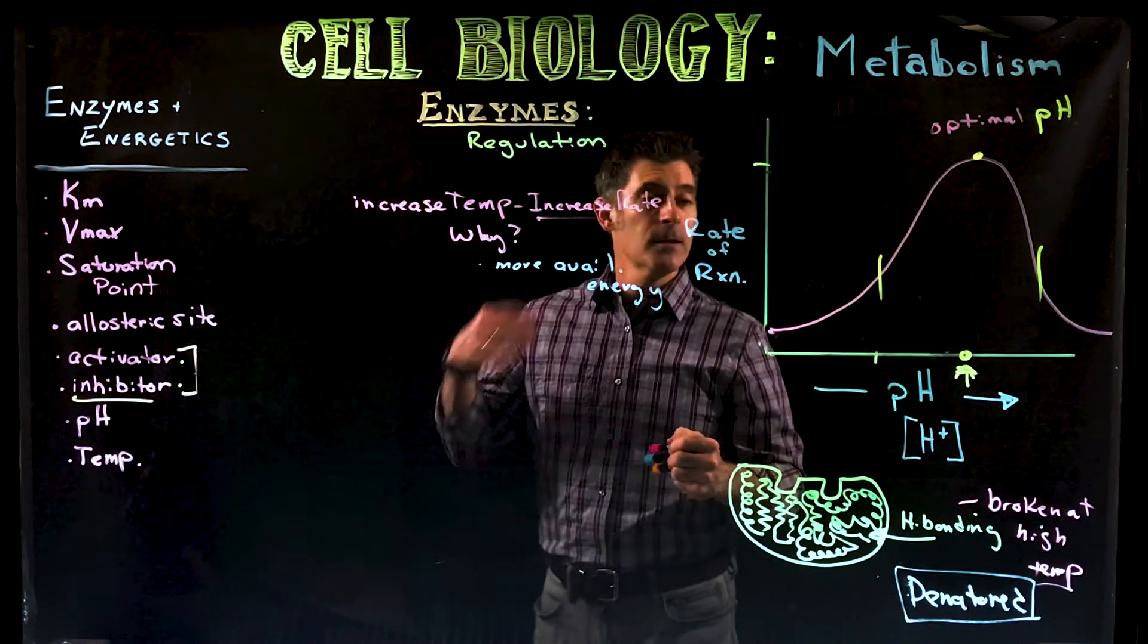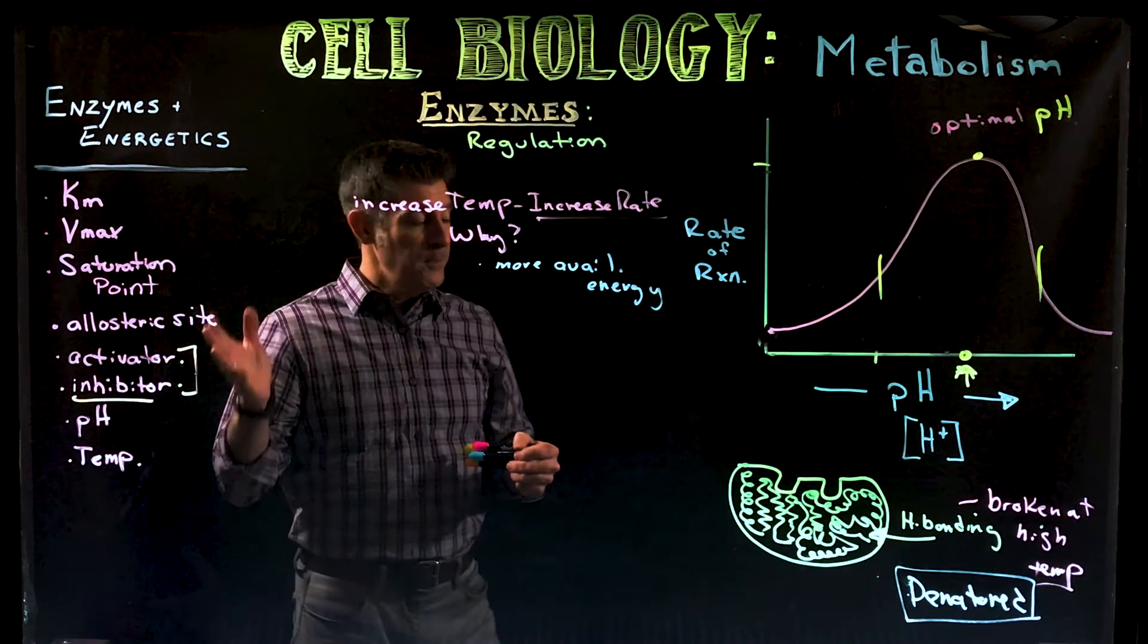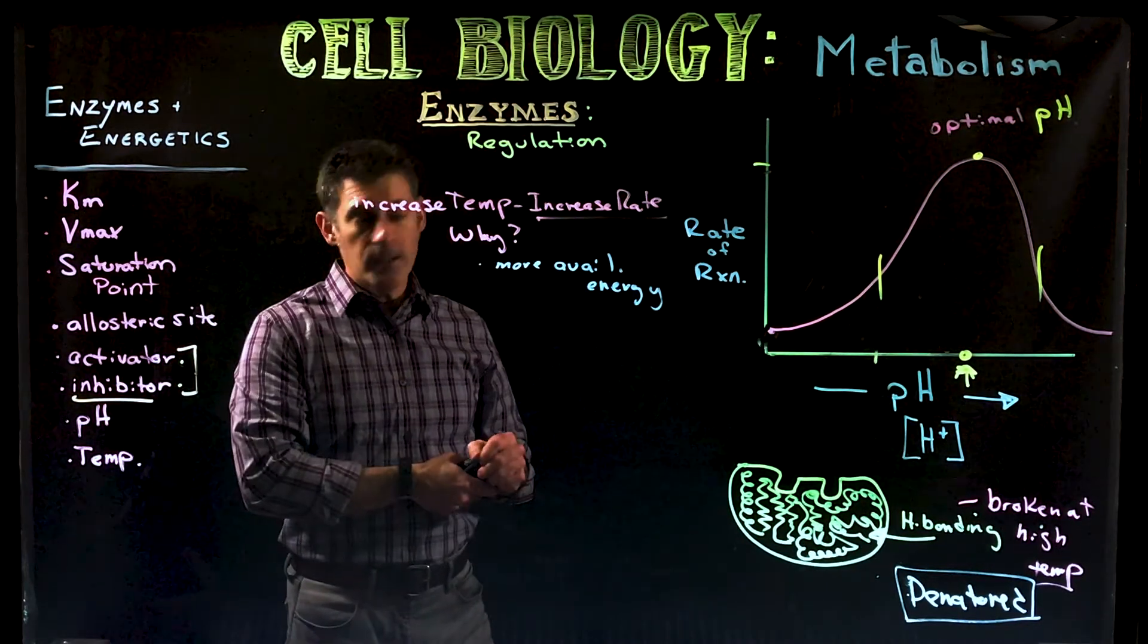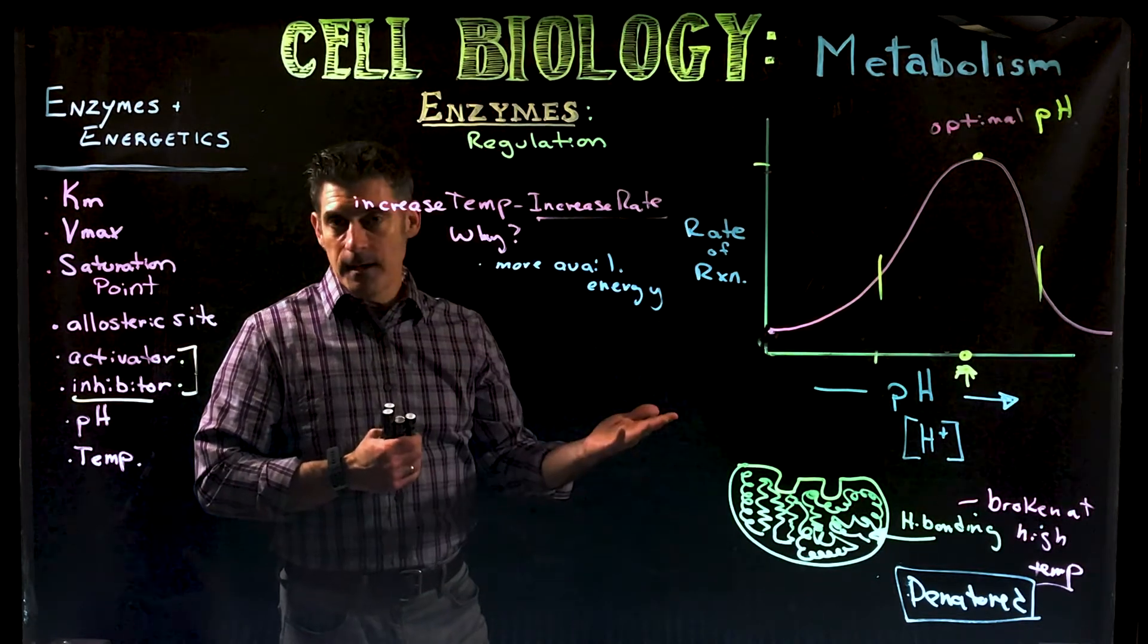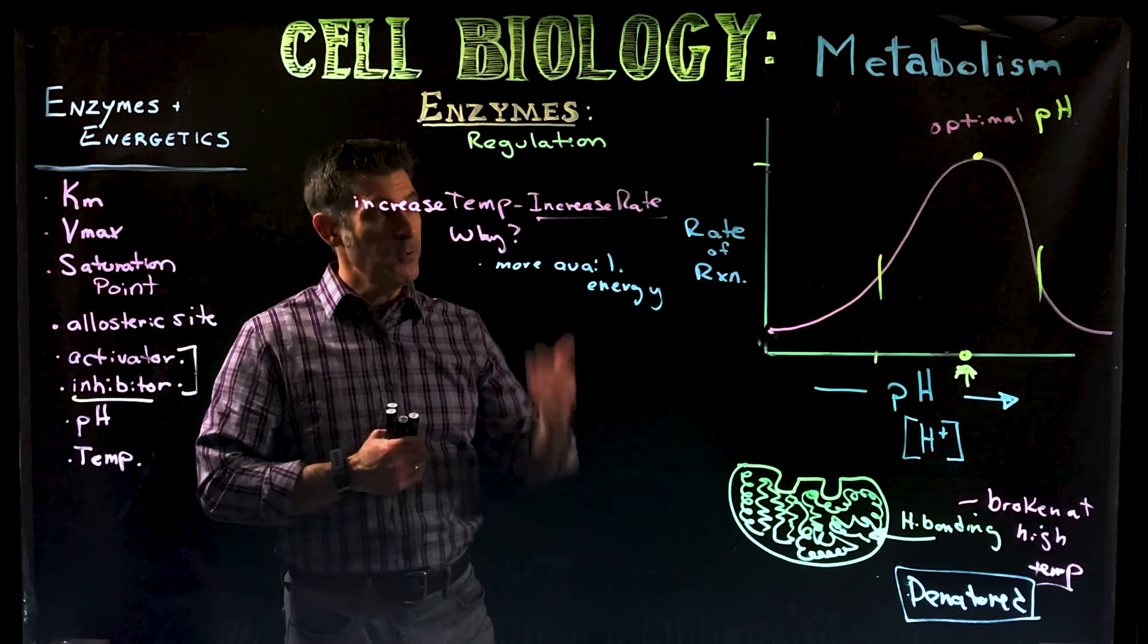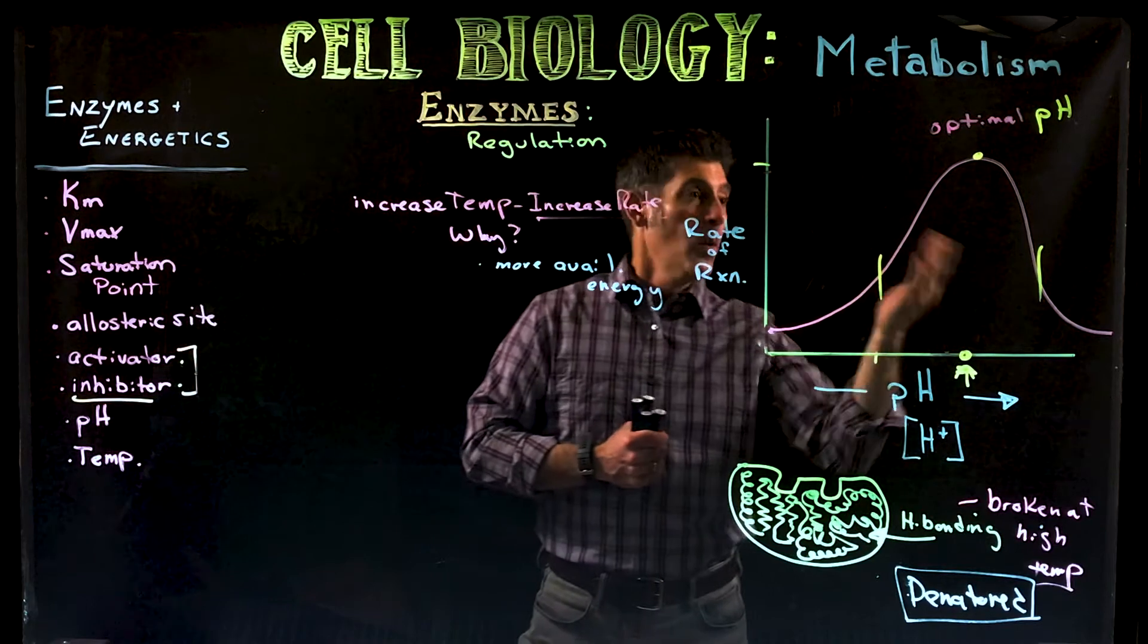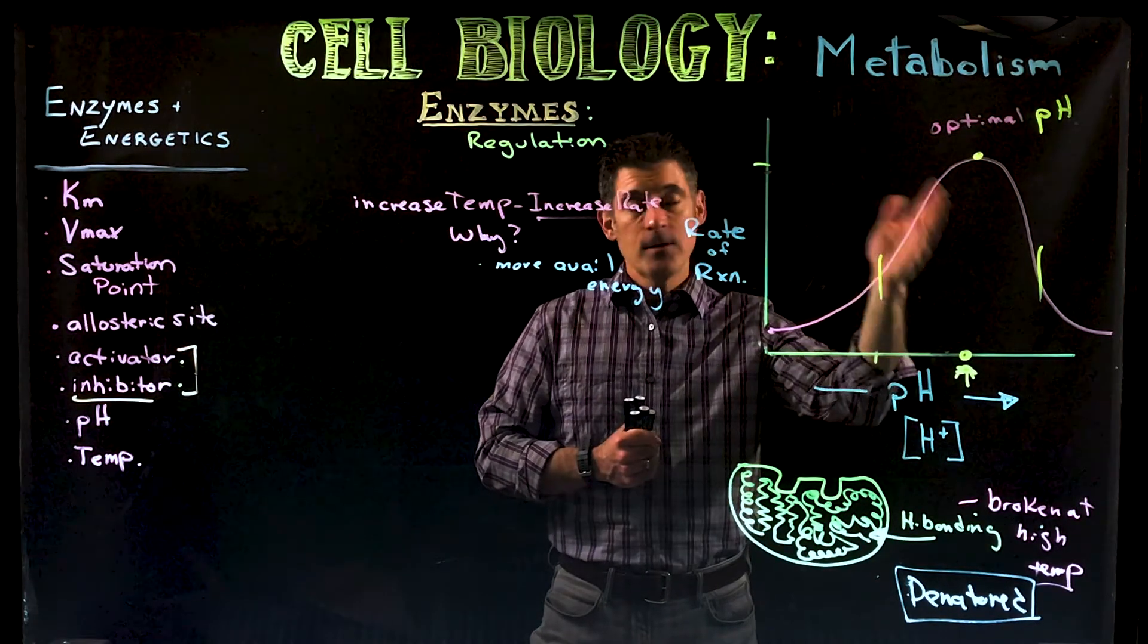So environmental conditions, heat, energy, charge of the environment, these things will affect essentially the shape of the protein, and that will then regulate how well it can work. So there's a certain point where they're working best. Best pH, optimal pH,